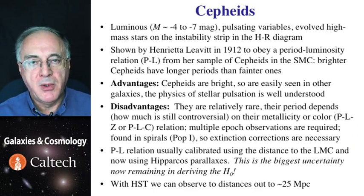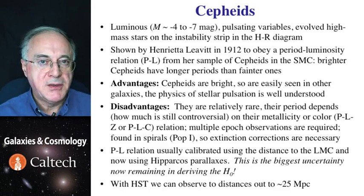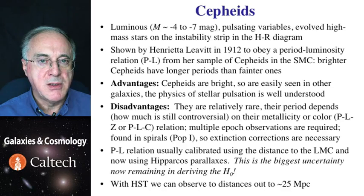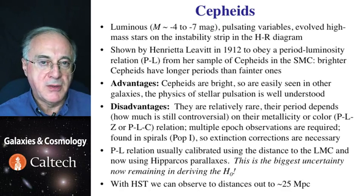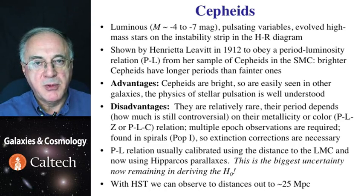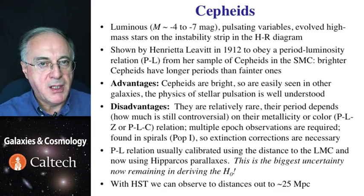Cepheids remain among the most important distance indicators altogether. They are young, luminous stars, therefore found in star-forming disks and regions, whereas Delta Cephei itself is relatively bright within our own galaxy. It was Henrietta Leavitt, working with Harlow Shapley, who recognized a correlation between period and luminosity as they were studying stars in the Magellanic clouds, about 50 kiloparsecs away. Since all of them were roughly at the same distance, apparent magnitude would correlate with period. Cepheids are important because they are bright and we can see them far away — out to maybe 25 megaparsecs. So we can calibrate distances to a number of nearby galaxies using Cepheids, and then use those distances to calibrate other relations.